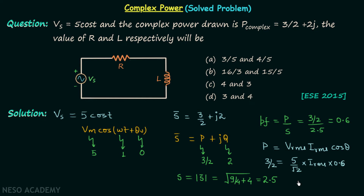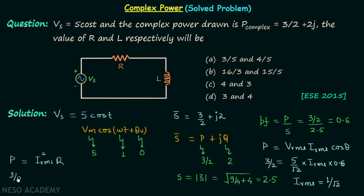From this equation we can solve for Irms, which equals 1/√2. Now we can calculate resistance R. The power dissipated by the resistor equals the real power delivered by the source: P = Irms² × R. With P = 3/2 and Irms² = 1/2, we get resistance R = 3.